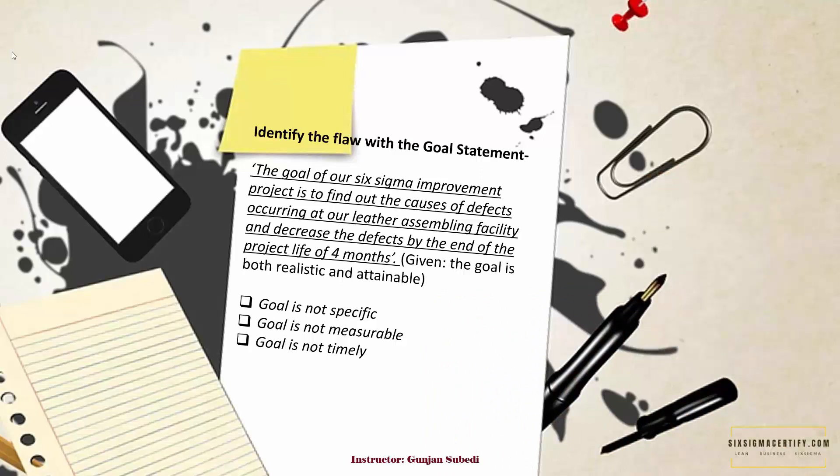We are given that the goal is both realistic and attainable. We have to find out if the goal isn't specific, measurable, or timely. I will give you some time to think for the answer — you can pause the video now. This is quite an interesting question. You might have noticed that this statement uses some form of the SMART goals that we have studied in the lecture on formation of the SMART goal statement.